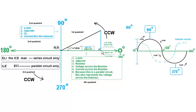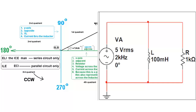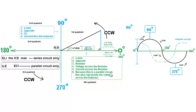The horizontal axis also represents the resistor — and the voltage across the resistor and the current through the resistor are all in phase with one another. Not only that, but the voltage across the inductor is also represented by the horizontal axis. Why? Because the same voltage is applied across both the inductor and the resistor — this is a parallel circuit.